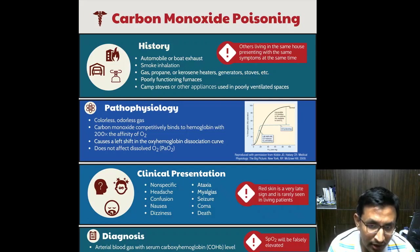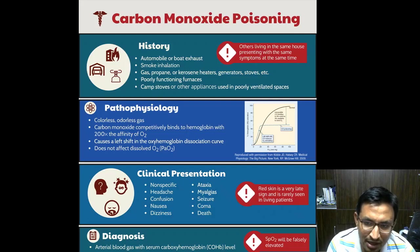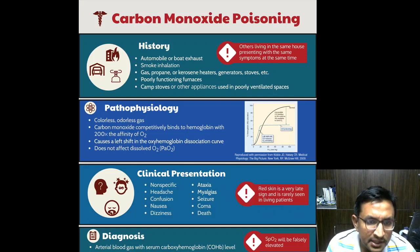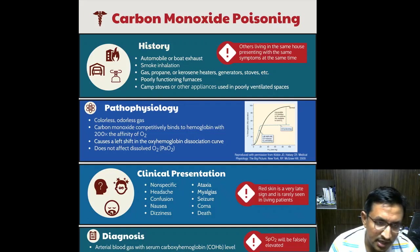The formation of carboxyhemoglobin diminishes the blood's capacity to carry oxygen to the tissues and organs. Despite the presence of adequate oxygen levels in the environment, the blood cells can become starved of oxygen, leading to tissue damage and a variety of symptoms in individuals suffering from carbon monoxide poisoning.